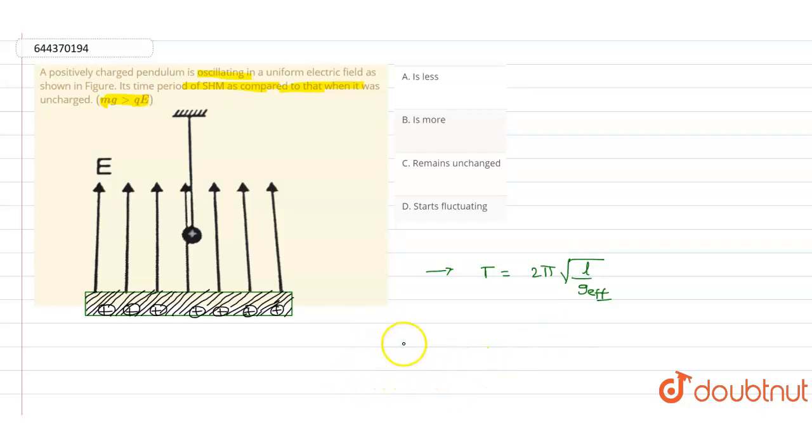So here g effective value will be equals to g minus electrostatic force divided by m.